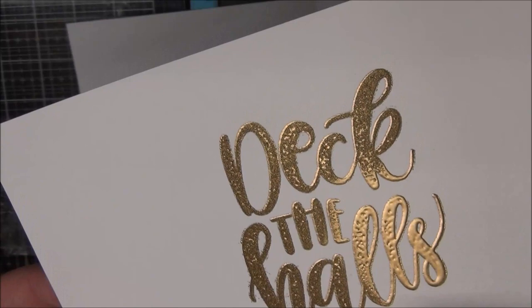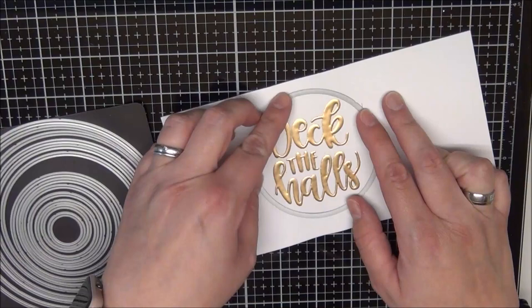Now I use my circle dies and cut out these vector holes with my Gemini Junior.